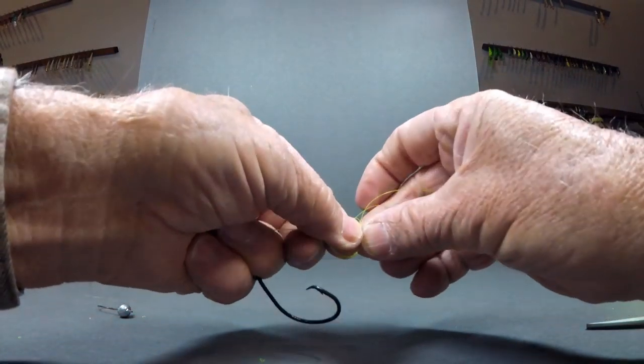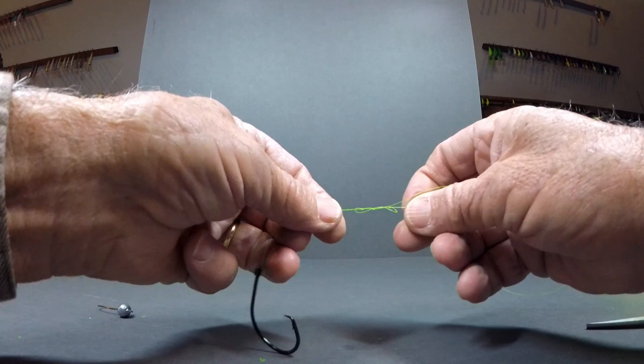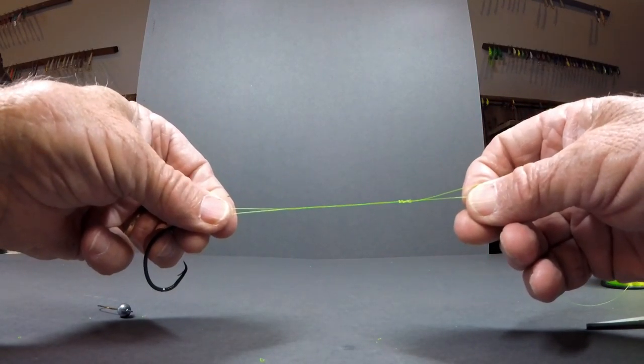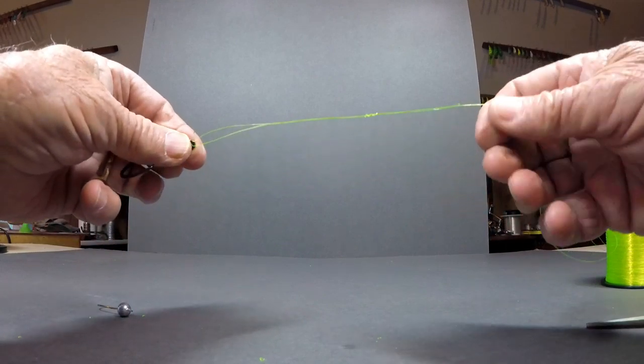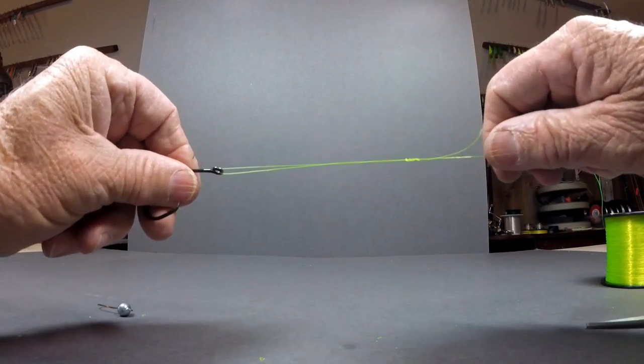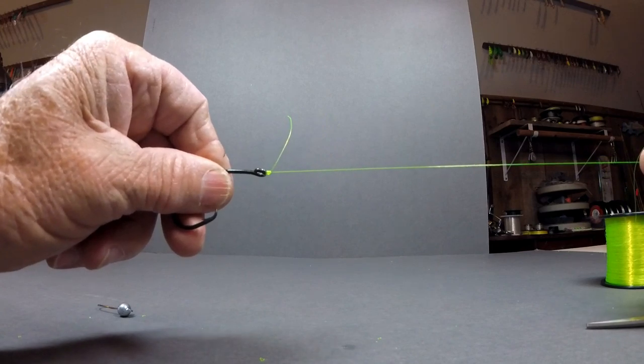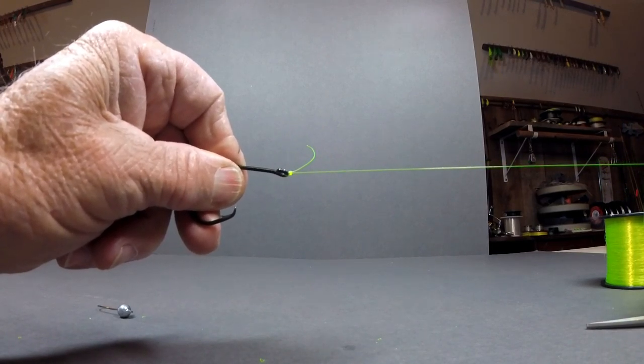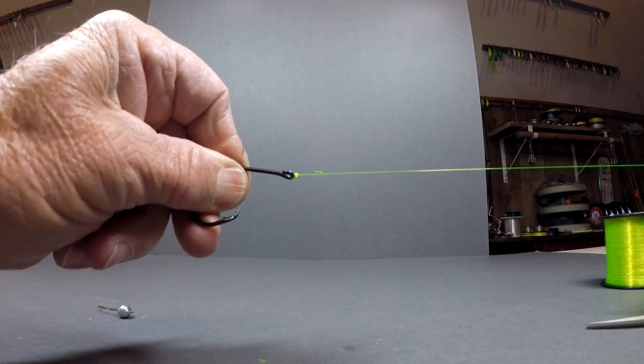Then you grab the tag line and pull it until you form the knot, and then you pull the main line and slide the knot down to the hook. This is what we call the manual method. This knot can be tied two different ways. This is the slowest way and we call it the manual method.